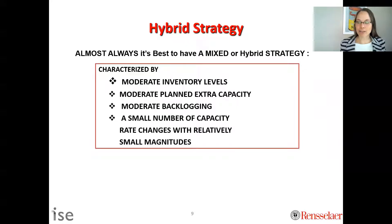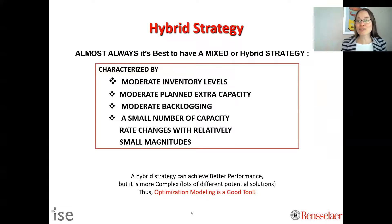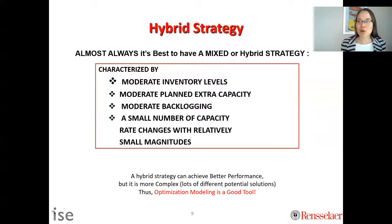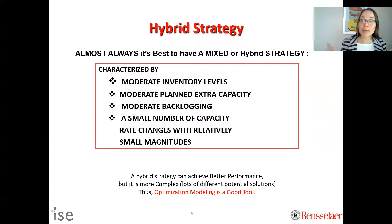However, a 'moderate level' of each buffer means there are combinatorially many ways to combine a little bit of inventory, a little bit of capacity, and a little bit of extra people. A hybrid strategy typically achieves better performance, but it's more complex. Anytime there are combinatorially many options and we want to pick the best one, that's when optimization is a really good tool.